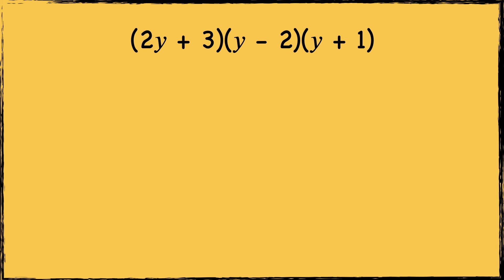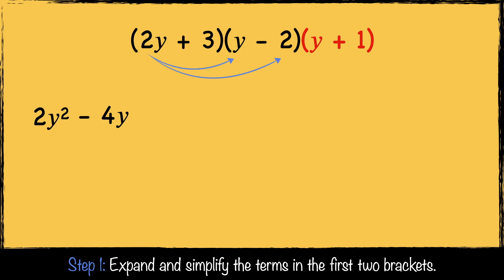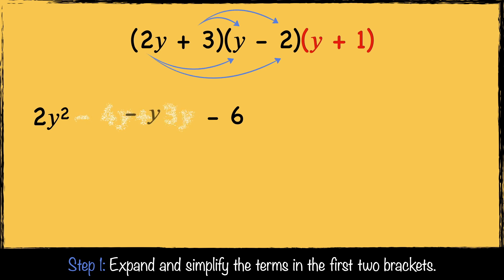Here's the last example. Let's start with step one — we're going to expand and simplify the terms in the first two brackets. 2y multiplied by y is 2y squared. 2y multiplied by minus 2 is minus 4y. Next we multiply 3 by y, which gives us 3y. Then 3 multiplied by minus 2 gives us minus 6. Now we simplify by combining the like terms: minus 4y and 3y combine to get minus y.